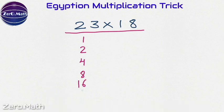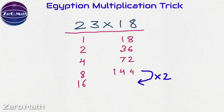Now the next step is to write the other number in front of this number 1, so the other number is 18. Let's write it in front of number 1 and now keep doubling it. So 18 into 2 is 36, 36 into 2 is 72, 72 into 2 is 144, and 144 into 2 is 288.